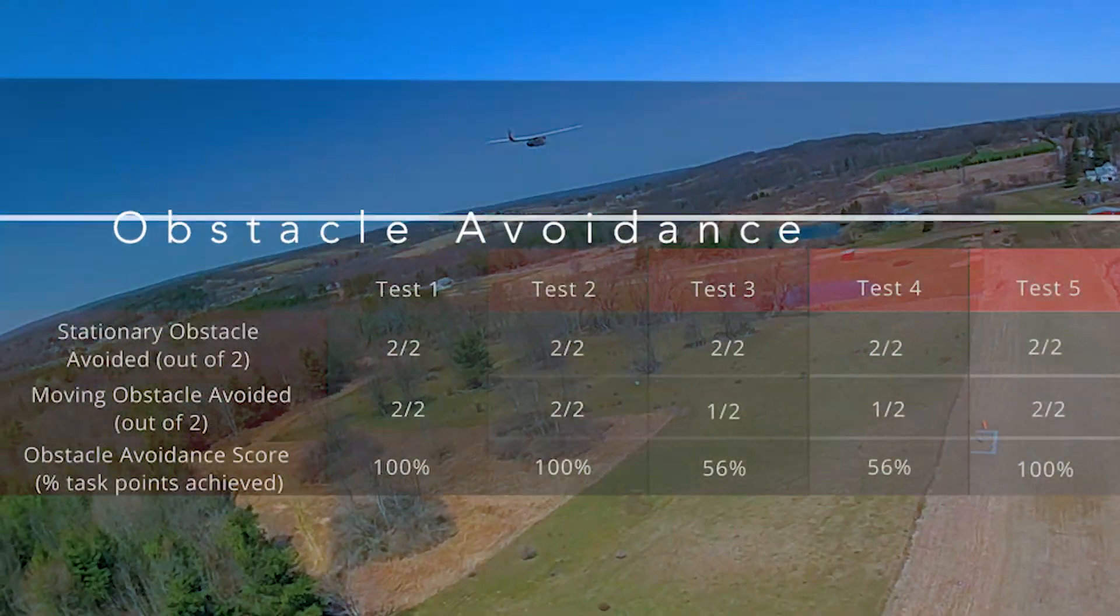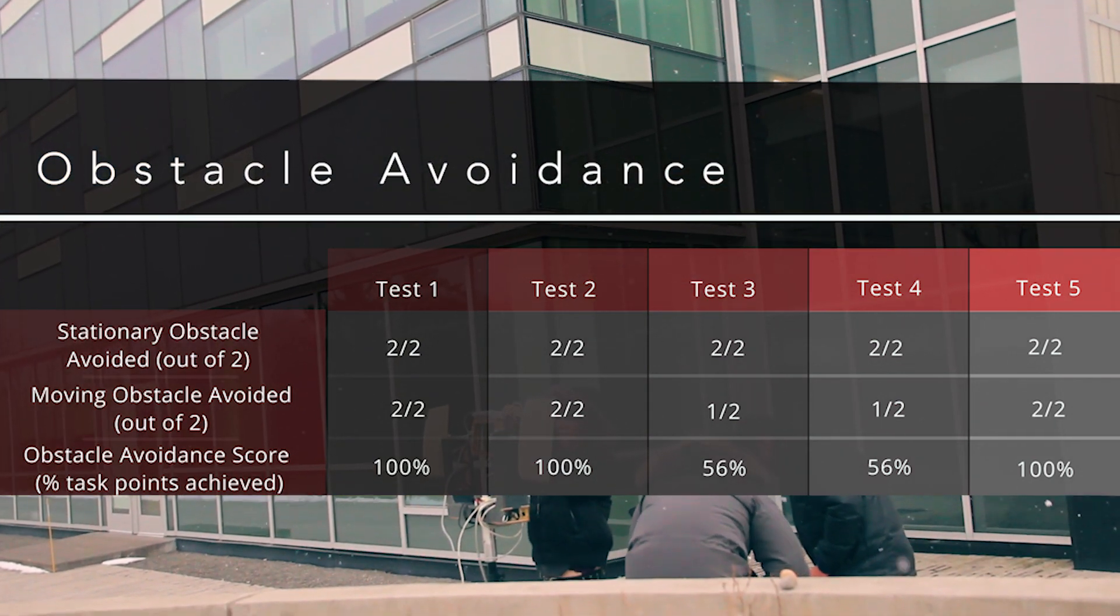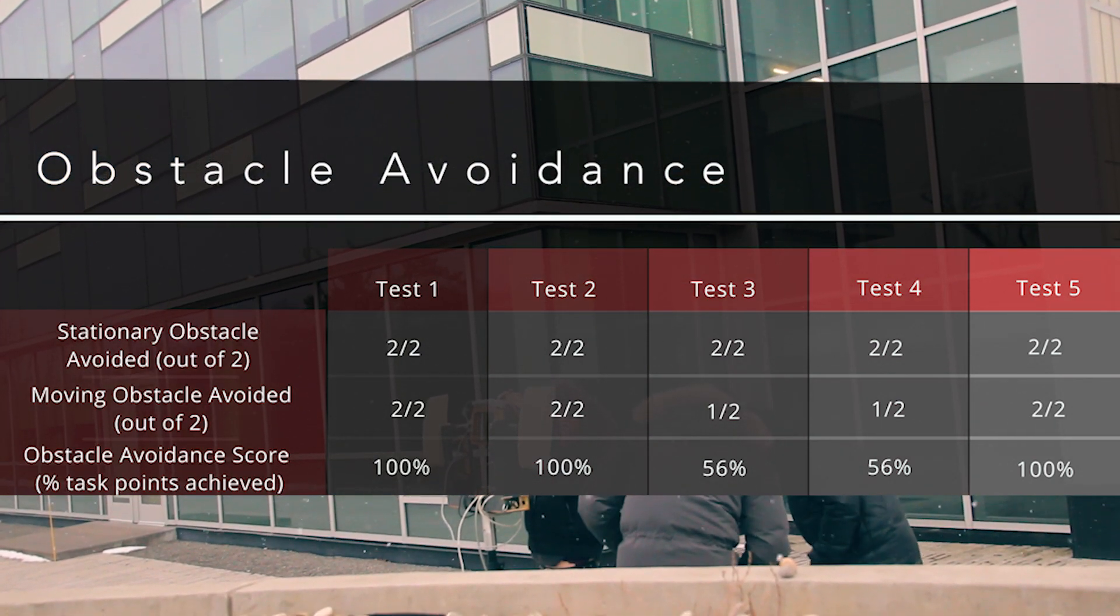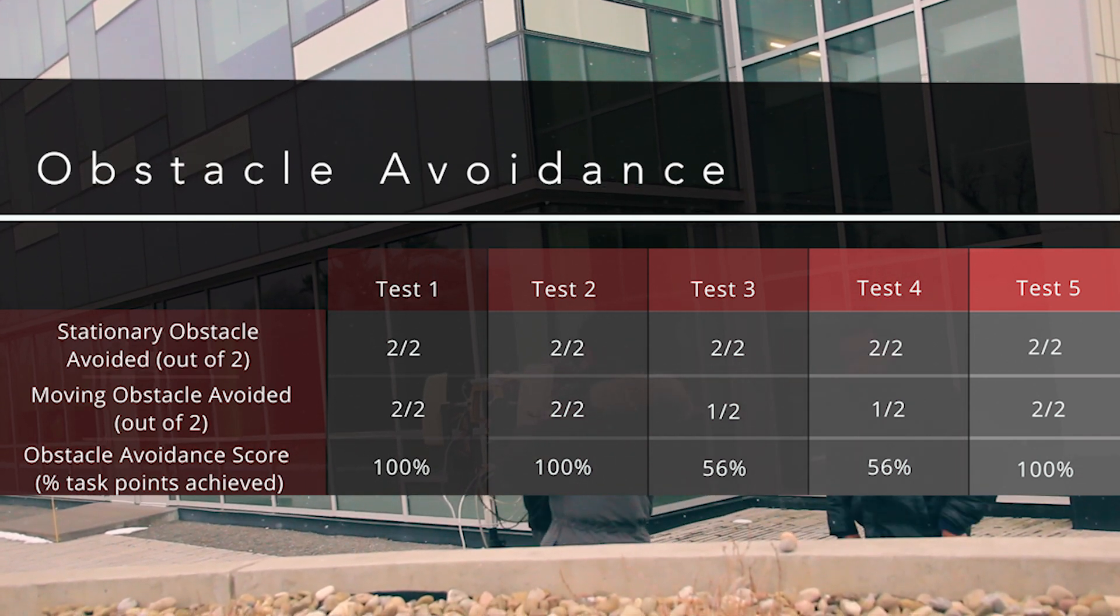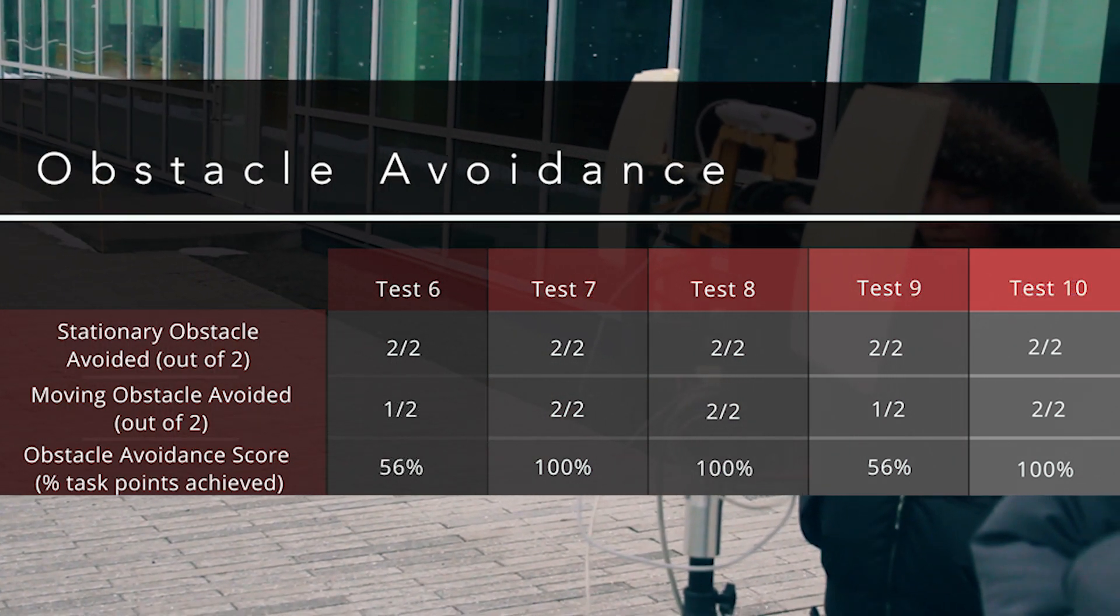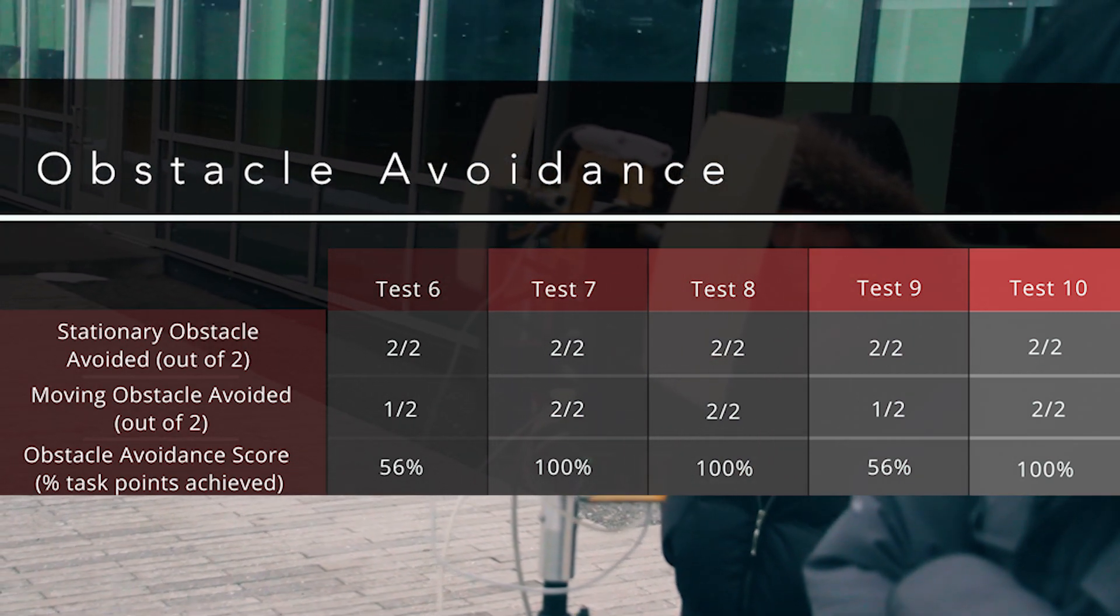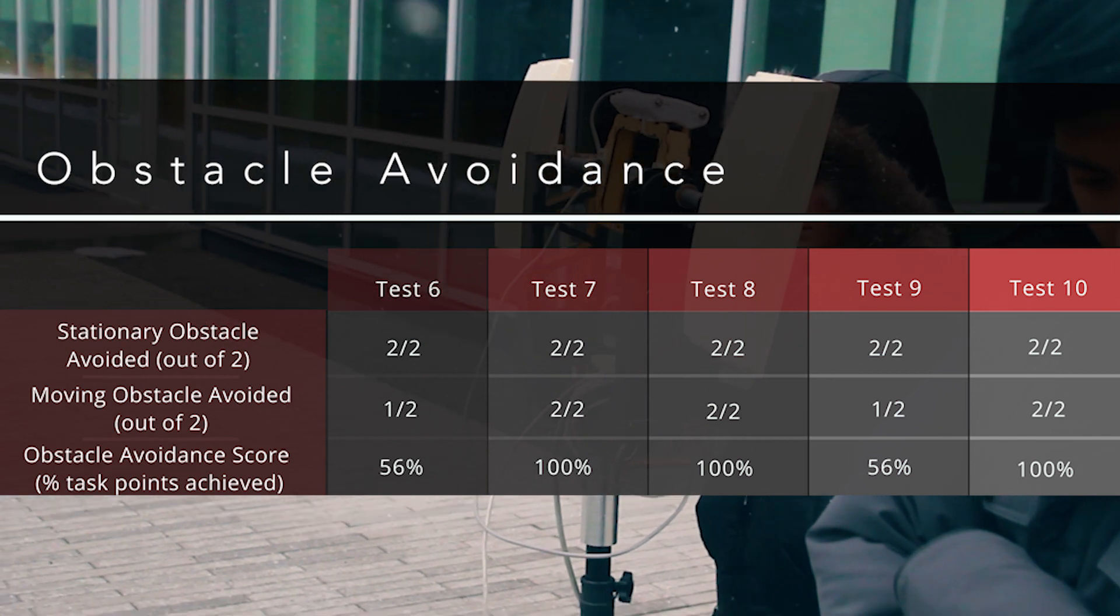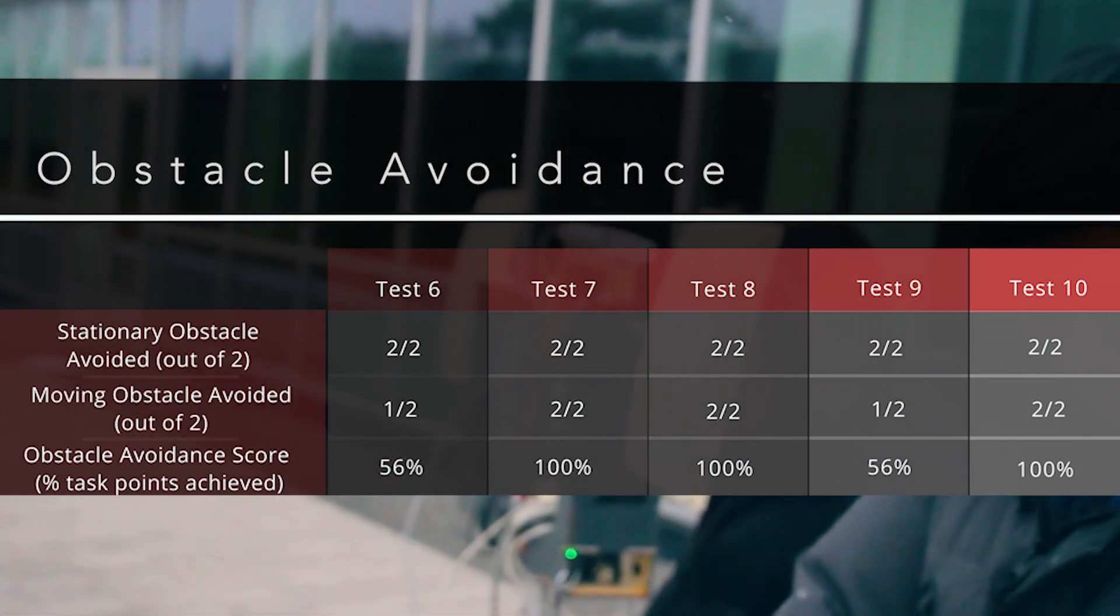CU Air scored an average of 83% of points on the obstacle avoidance task. In every flight, the team tested against two of each type of obstacle. Thea 2 successfully avoided all stationary obstacles and often avoided all moving obstacles, scoring on average 80% of moving obstacle points. In competition, the team expects to avoid all stationary obstacles, and hopes the large airfield will provide more room for maneuvering around the moving obstacles.